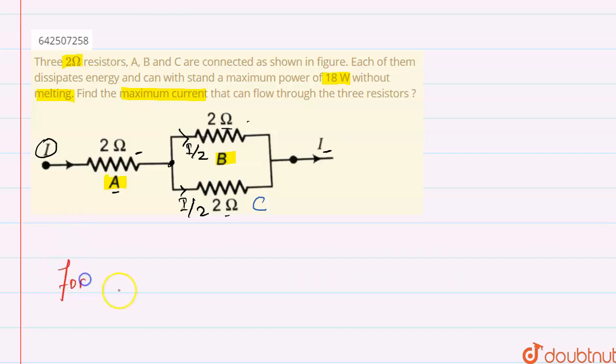We'll take the condition for resistor A. The maximum power dissipated is P = I² × R. We have to find the maximum current, and maximum power is 18 watt given here.